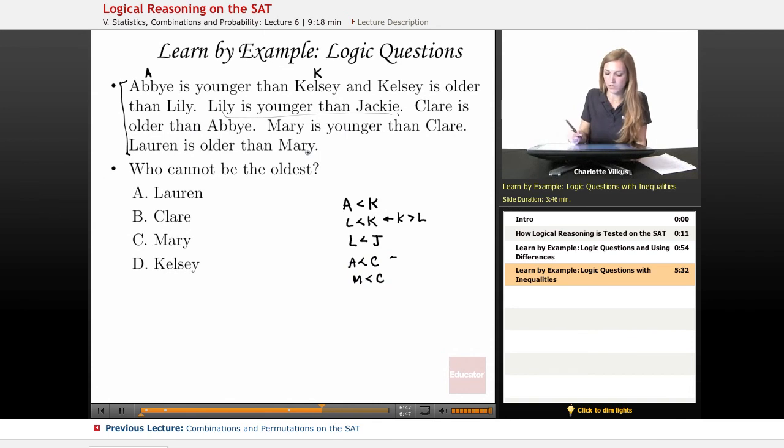And Lauren is older than Mary, so that means that M is also less than L. And here I have Lauren, not Lily, so I'm just going to put LA so I can tell the two apart.